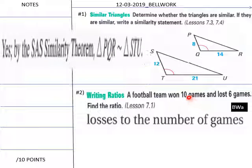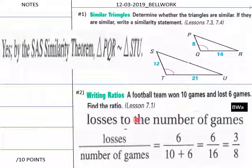Okay, welcome back for the solution of today's bell work. Yes, they are similar by side-angle-side similarity theorem. Triangle PQR is similar to triangle STU. Because of this similarity theorem here, the sides are in proportion. And then losses to number of games, 2 is a word for a fraction bar or some kind of ratio sign like a full colon. And in this case, it's 6 to 10 plus 6. The football team won 10, lost 6. Total of 16 games. 6 to 16 is 3 to 8, your loss to number of games ratio.